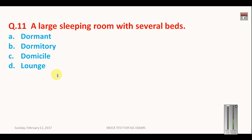Question number 11: A large sleeping room with several beds, what is the name for that? It is called dormitory. It's a big room where several beds are kept. It's a kind of common room shared by many people. Dormant means inactive. Domicile means residence and lounge, it's a particular area in hotel. So a large sleeping room with several beds is called dormitory.